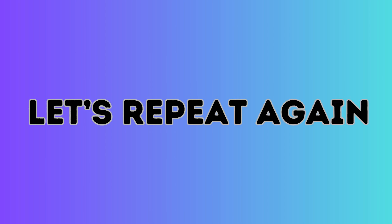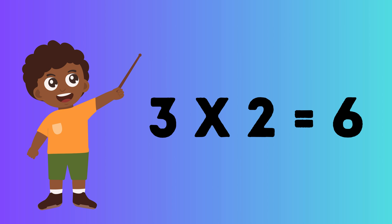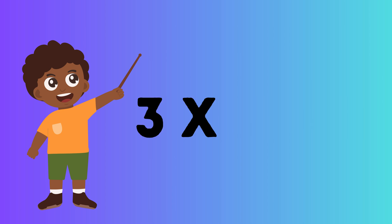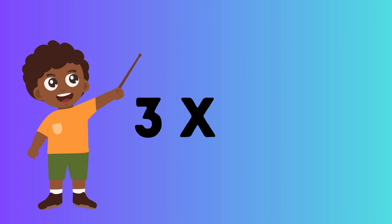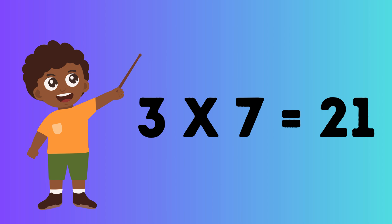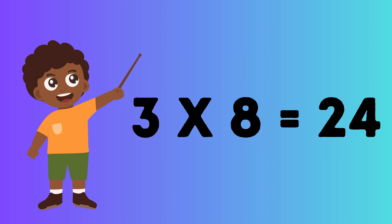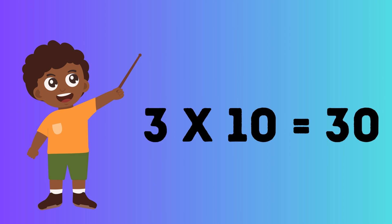Let's repeat again. 3 1's are 3. 3 2's are 6. 3 3's are 9. 3 4's are 12. 3 5's are 15. 3 6's are 18. 3 7's are 21. 3 8's are 24. 3 9's are 27. 3 10's are 30.